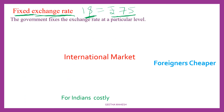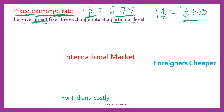Now let's discuss fixed exchange rate. What is the fixed exchange rate? This exchange rate is fixed by the government at a particular level, a particular value. For example, one dollar is equal to rupees 80 — that is the fixed exchange rate.